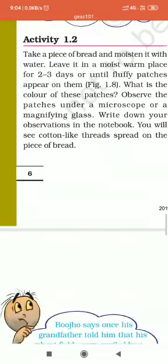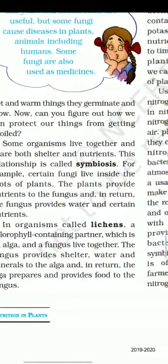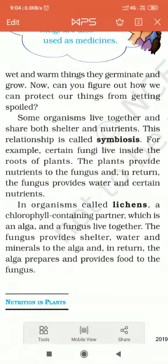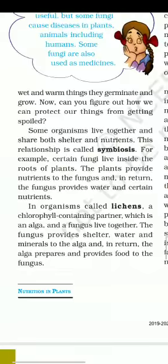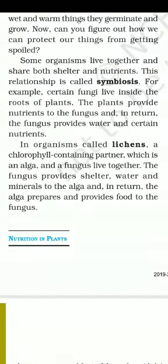After that, write the definition of symbiosis: some organisms live together and share both shelter and nutrients — this relationship is called symbiosis. Then write the definition of lichens: in organisms called lichens, a chlorophyll-containing partner which is an alga and a fungus live together. The fungus provides shelter, water, and minerals to the alga, and in return the alga prepares and provides food to the fungus. After writing all this, our class will be over. Show all these definitions to me in the evening. Thank you very much — stay safe, stay healthy, stay at home, and always wash your hands. Bye bye.